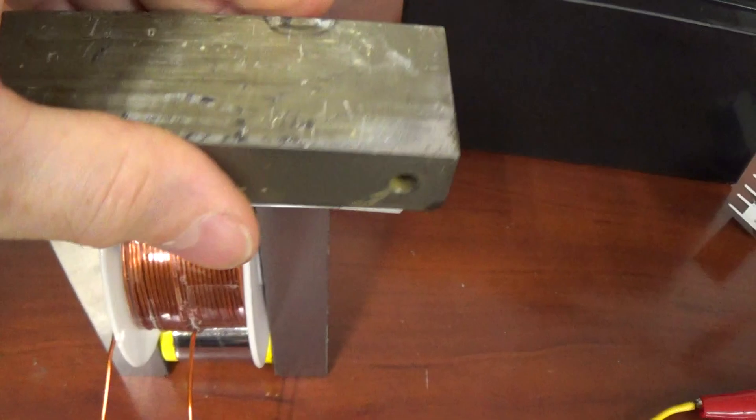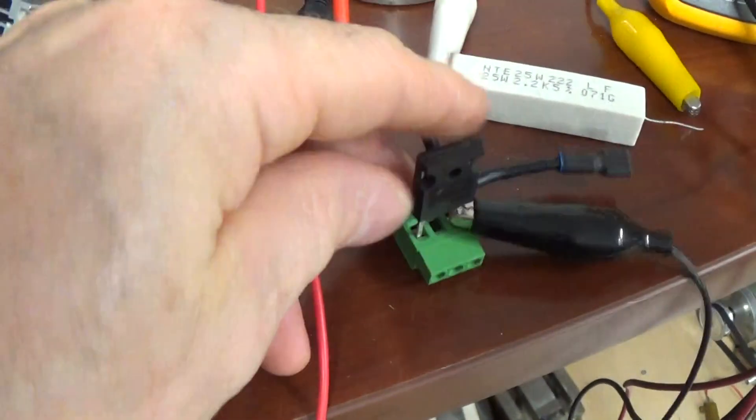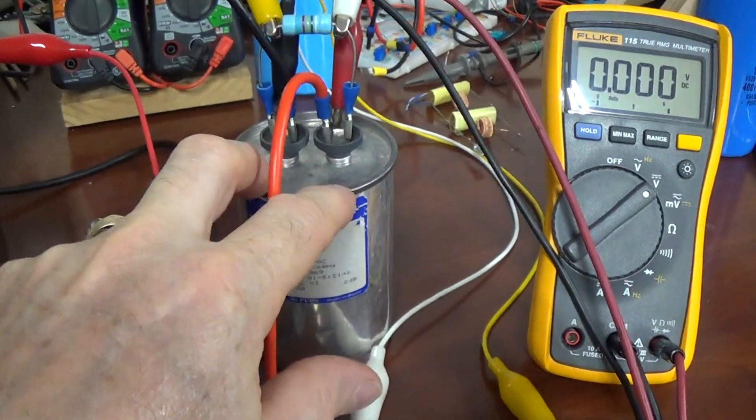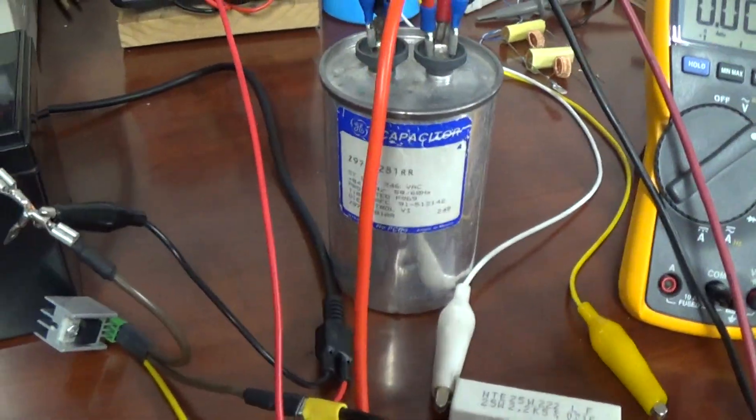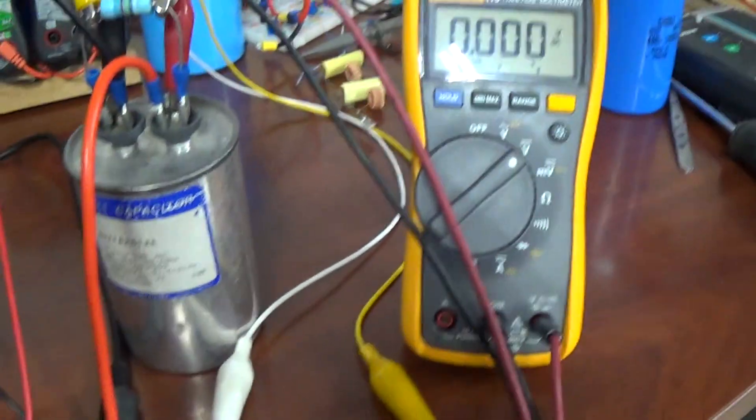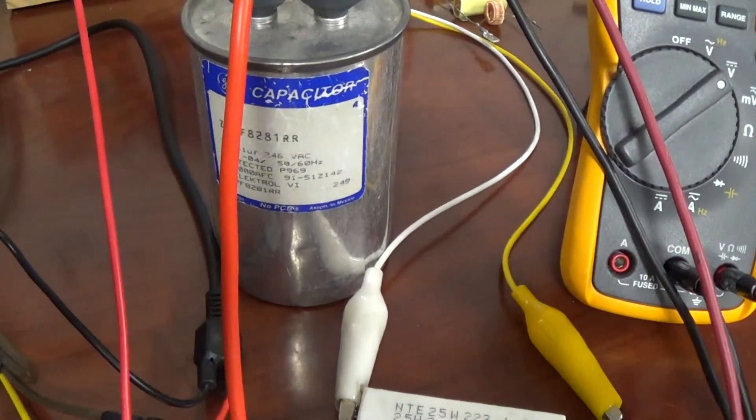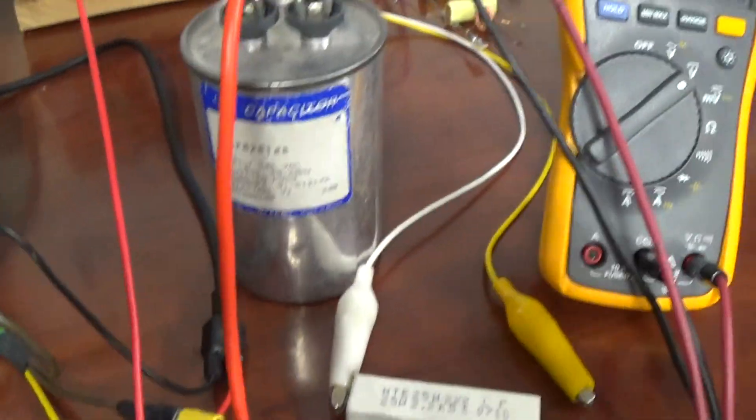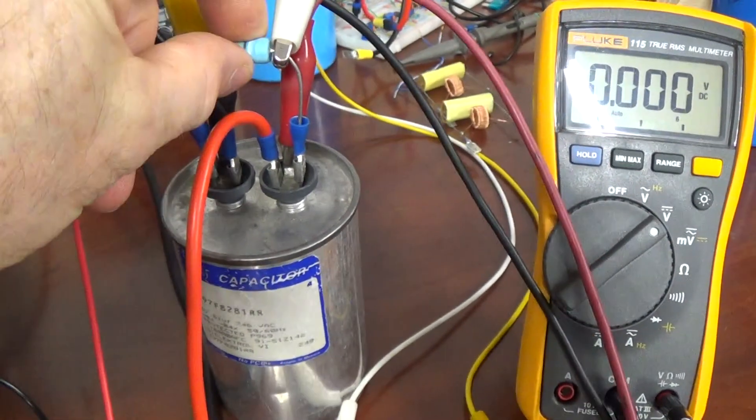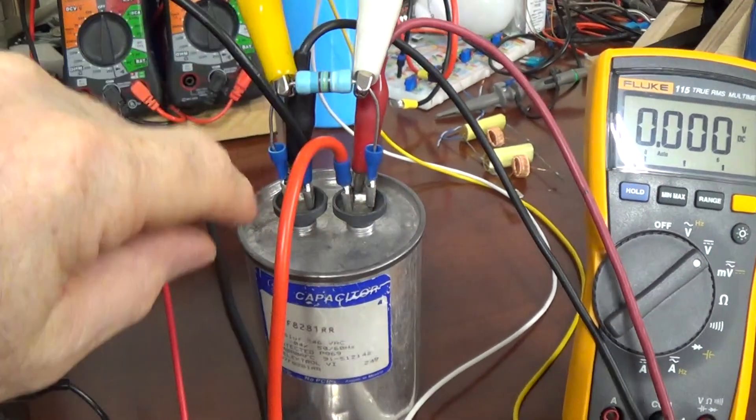And then I've got a flyback diode here which I'm sending back the flyback to this capacitor. Flyback's kind of small, not very significant, but you'll see it'll charge that probably close to 60 volts. That is a 60 microfarad AC capacitor.